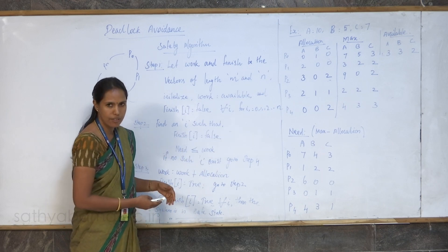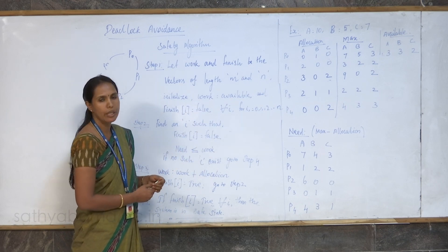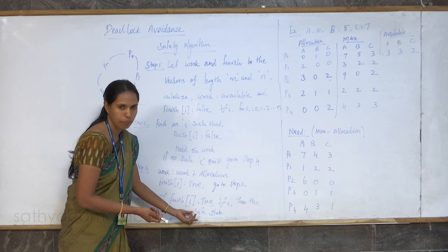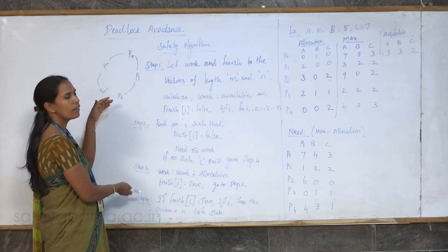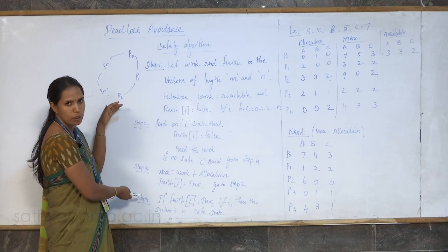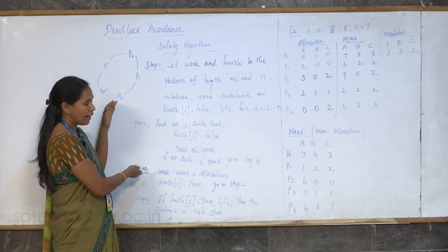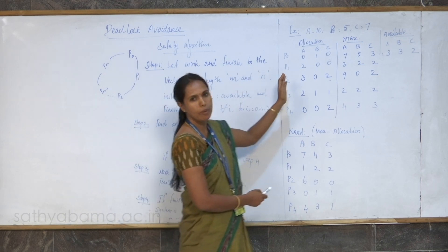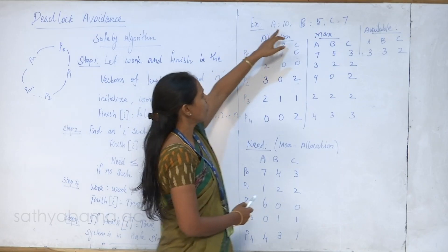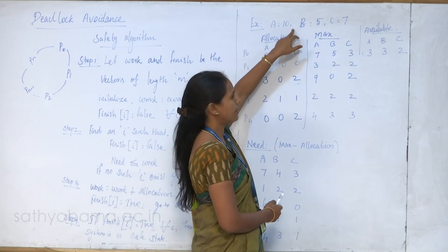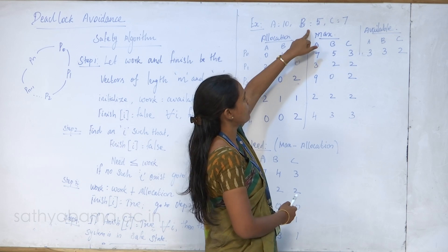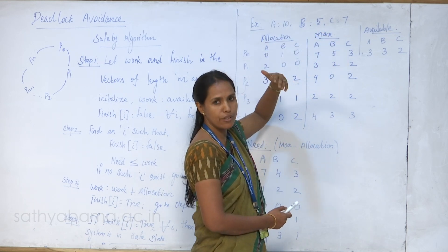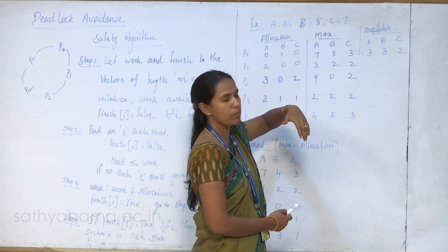We will discuss the safe sequence by looking at a numerical problem. This is the given data: A is equal to 10, B is equal to 5, and C is equal to 7. These represent the resource instances available in our system — for example, number of printers available is 10 and number of scanners available is 5.